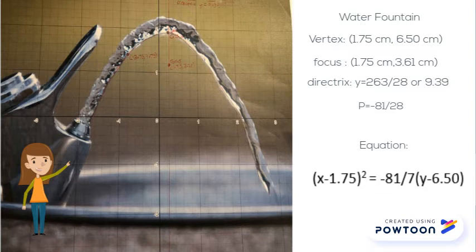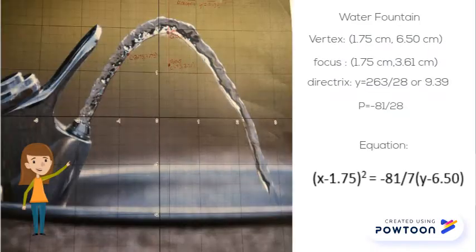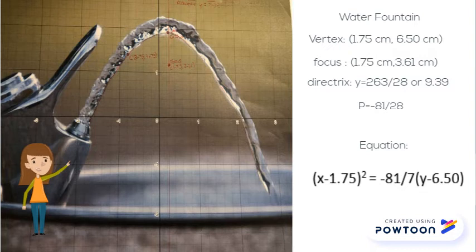I then plugged that information into the standard form equation, and all I was missing was the variable p. So I took a point off the graph and plugged it into the standard form equation so that the only missing variable was p. I then took the value I had found for p and used it to find my focus and directrix, and then plugged the values back into the standard form equation to come up with my final equation.